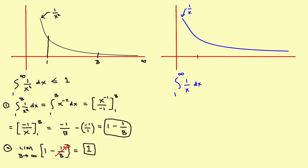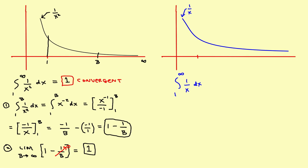When you take this limit, if it settles on a fixed number — which this one did — then it's called convergent. If the limit exists and settles on a single fixed number, it's convergent. Now let's try one that does not converge. When you first look at these two, they look the same — both are decreasing, both approach the x-axis. You might think this one will settle on a fixed number too, but watch the difference.